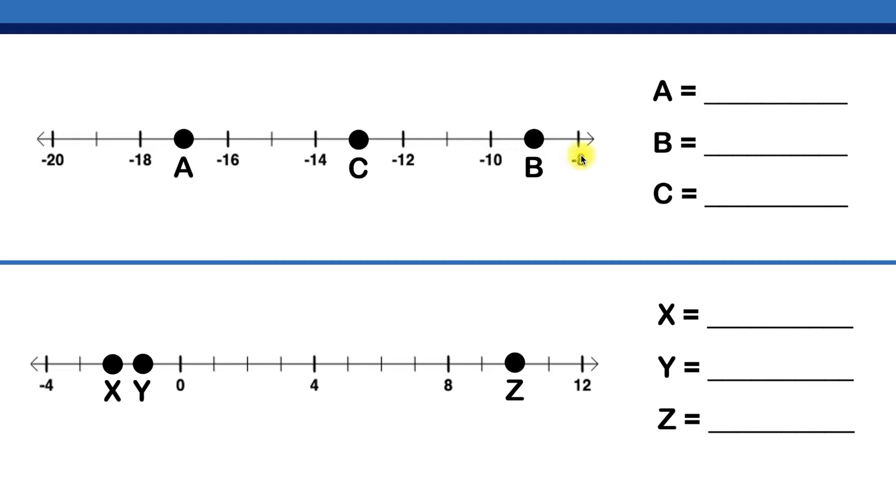Here this is negative 8 and this is negative 10. So what integer do you think will go after negative 8 but before negative 10? Well that would be negative 9.